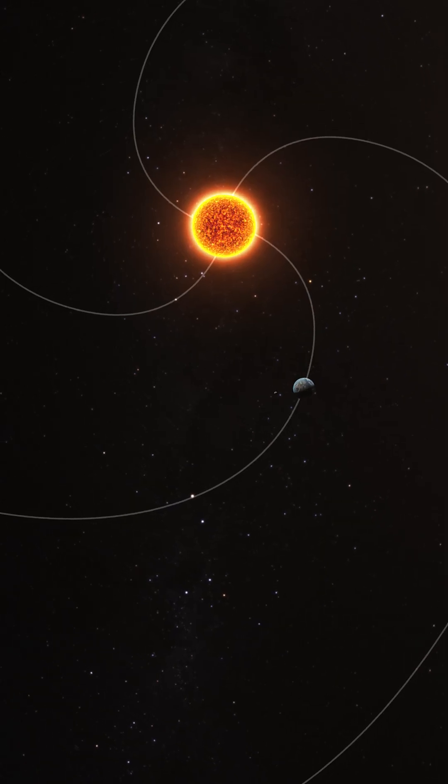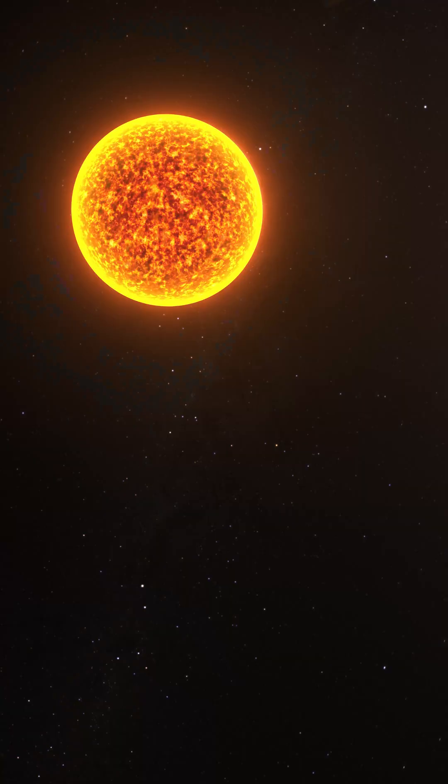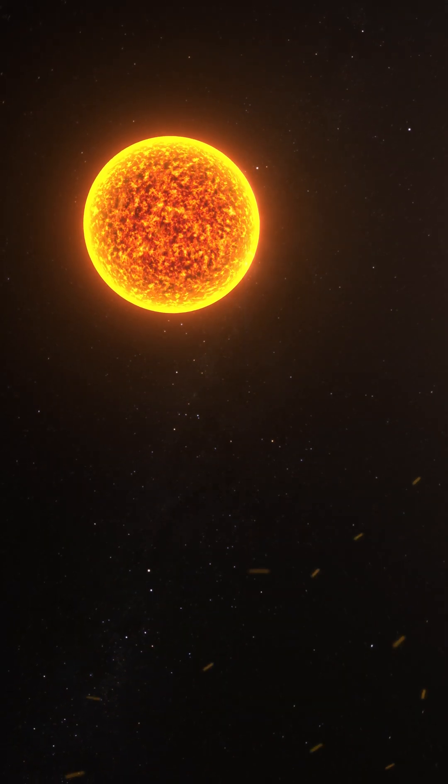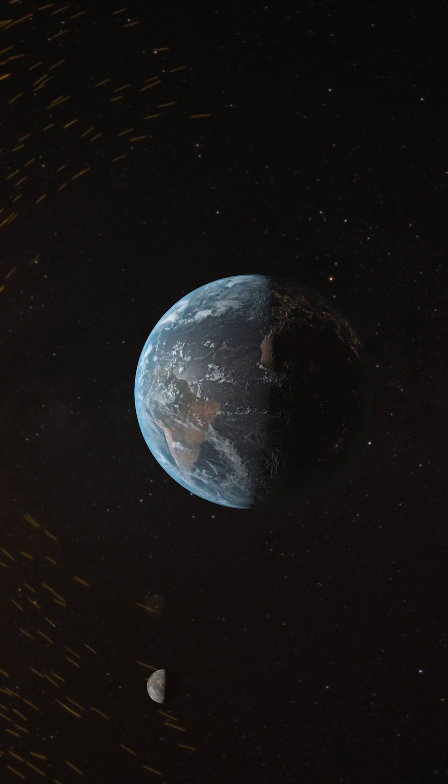But every now and then, the sun adds to this constant background. When there are flares on the sun, so-called proton events, if radiation is massively emitted from the surface of the sun, then the radiation flux is much stronger.